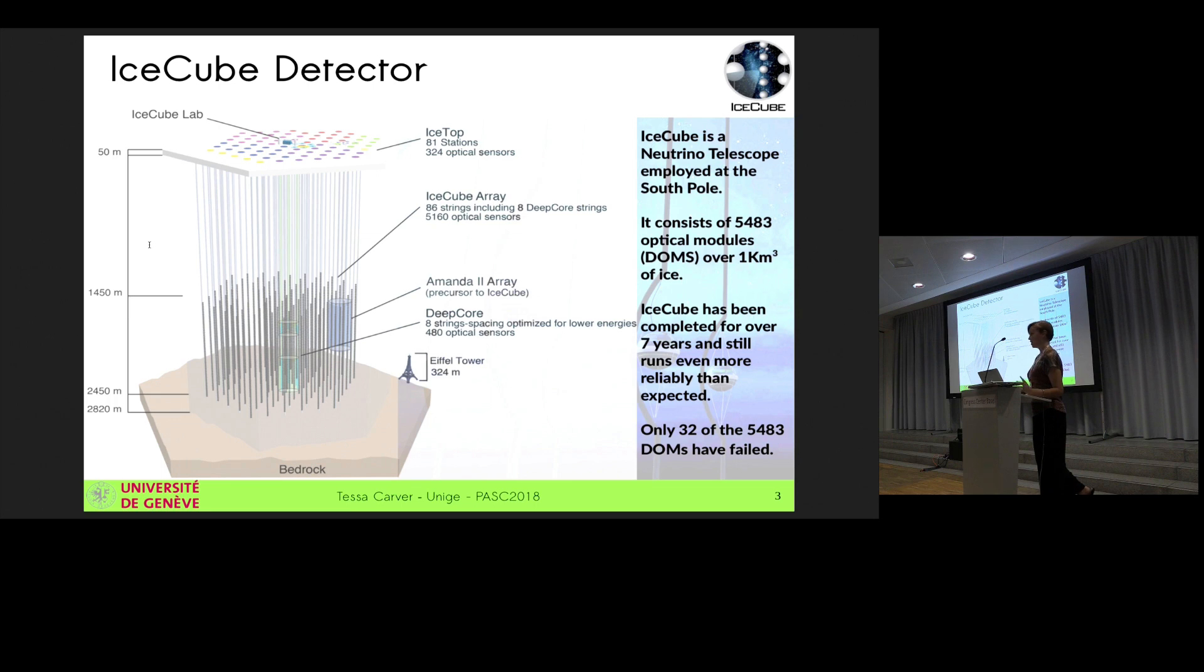And these strings are about 100 meters apart, so they're very far apart. We're looking for very, very high energy events. And it's a pretty reliable detector right now. We've been running for about 10 years, and we have over 5,000 optical modules, and so far only 32 of them have failed. So we're pretty happy with how it's working. We're hoping it will keep running for a really long time.